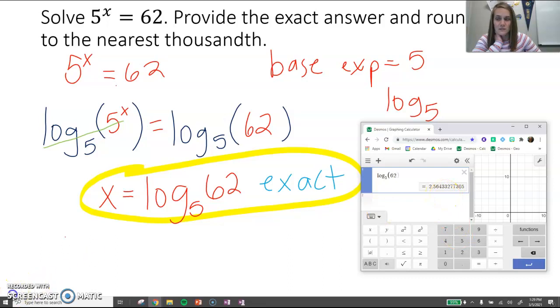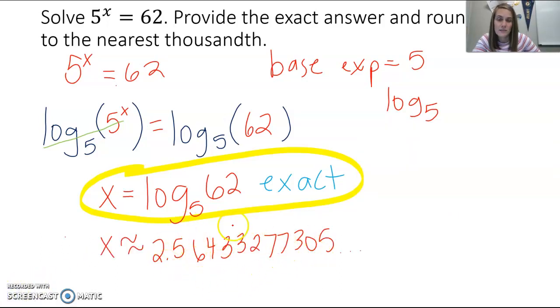So I'll write that down. So this is the decimal that I got from Desmos, but we want to round it to the thousandths, to the nearest thousandths place. So our thousandths here would be our tenth, hundredth, thousandth, our four.